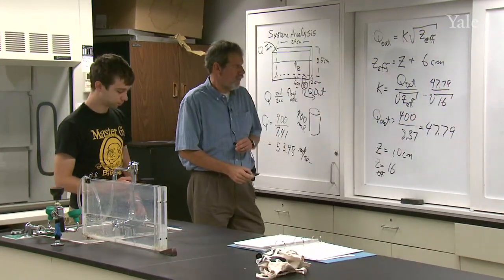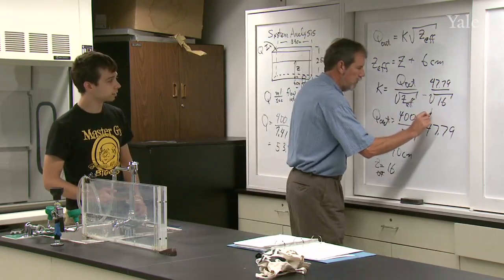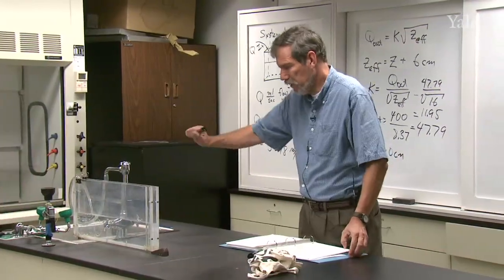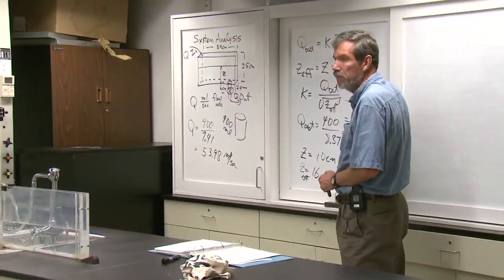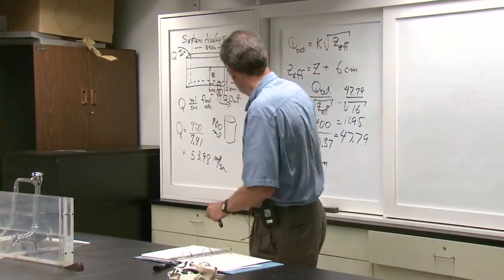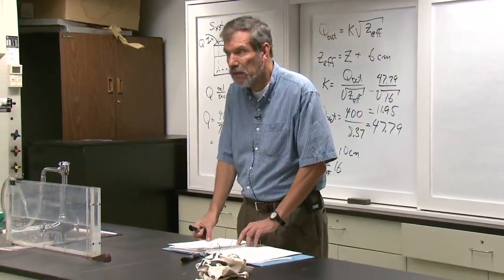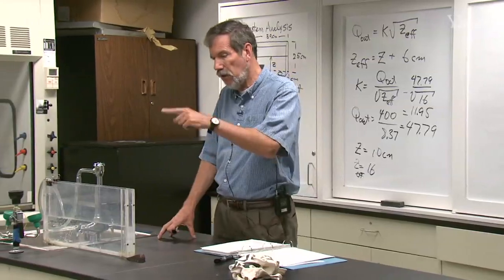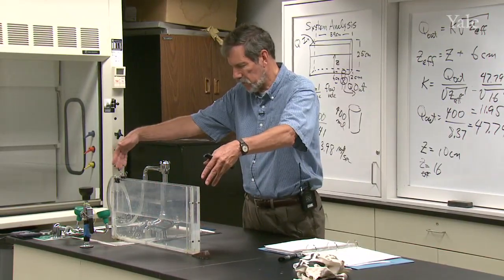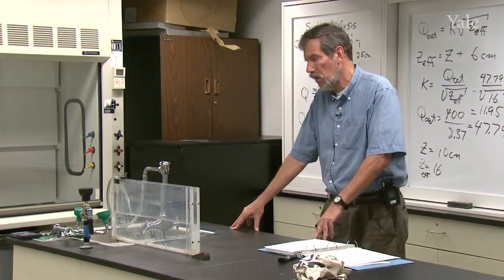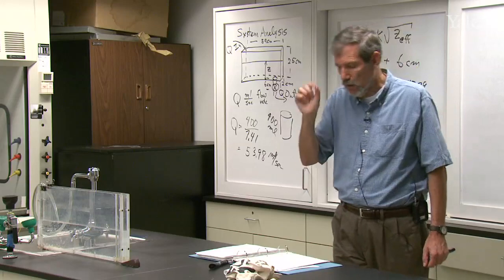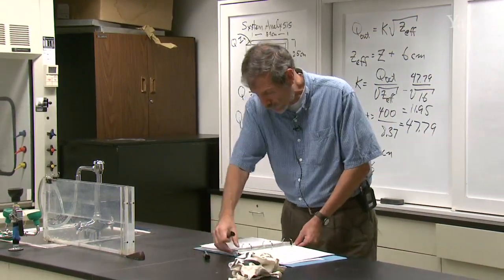So what is Q out? 47.79. Could you now measure the depth of this, please? In centimeters, come around and measure it from the top of the plastic there, not from the table, but from the top of the plastic, and get the depth. It's about 10 centimeters. So that means Z effective is going to be 16. So if you could do one more calculation for me. I need to get 47.79 divided by the square root of 16. Well, that's easy, isn't it? Square root of 16 is 4. So it's 11.95. So the valve constant K for that particular valve setting is 11.95.